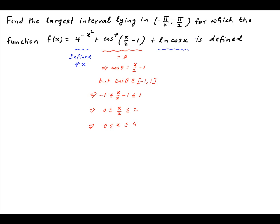The third term ln is defined when cos x is greater than 0. Now cos x is positive when x lies in the first or the fourth quadrant, and therefore x lies between -π/2 and π/2.